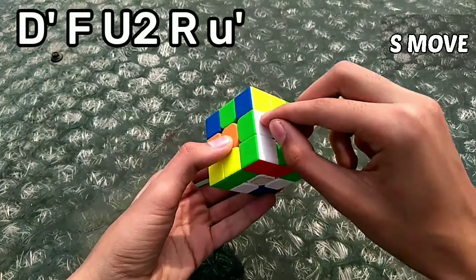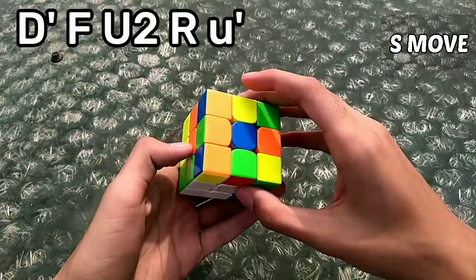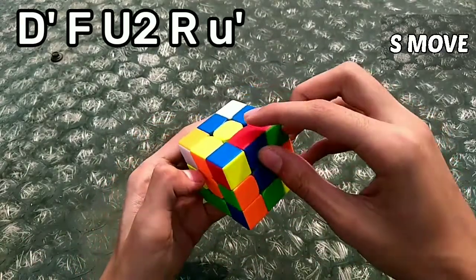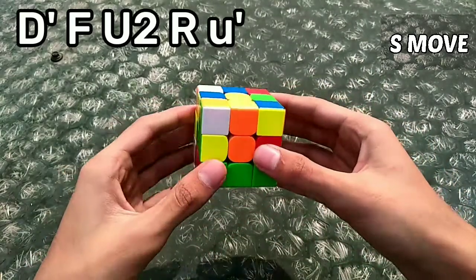This corner paired up with this green cross piece, so he did an F to solve it and a block was made up over here. Before solving blue with R, he did a U to attach this red-blue edge over here. After that he did R, so this was solved. After that, instead of doing